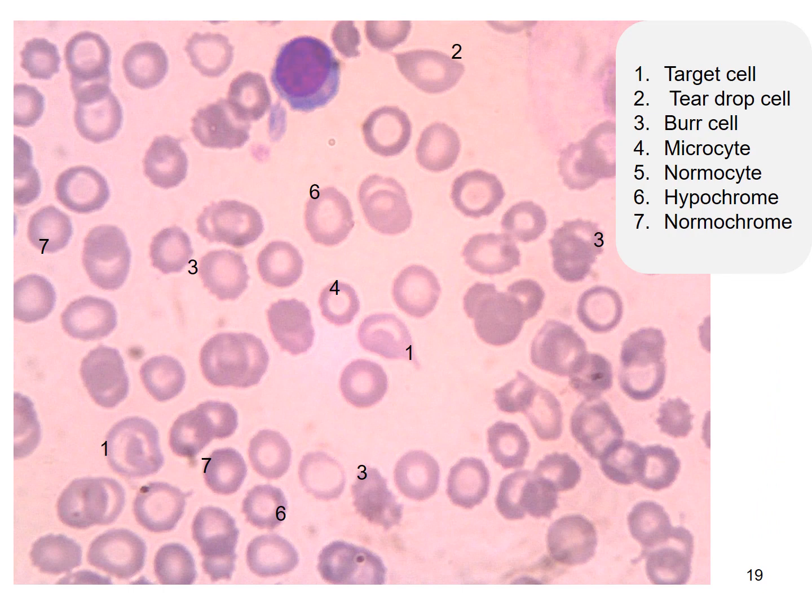In this picture, we can see number one is the target cell, number two is the teardrop cell, number three is a burr cell, number four is a microcyte, number five is a normocyte, number six is a hypochromic erythrocyte, and number seven is a normochromic erythrocyte.